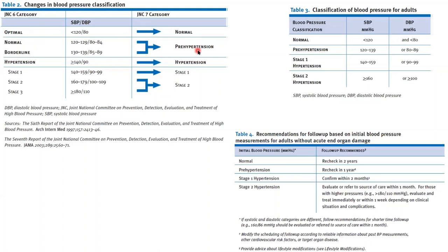All the values between 120–139 systolic and up to 89 diastolic are now referred to as pre-hypertension. Remember, this is not a disease but a warning sign that things are not optimal. Anything above 120 systolic and above 80 diastolic is something to be reckoned with. The cutoff is 139 systolic and 89 diastolic.